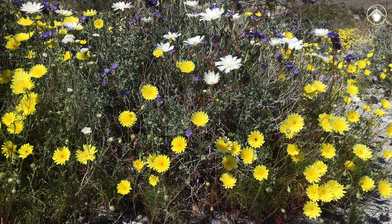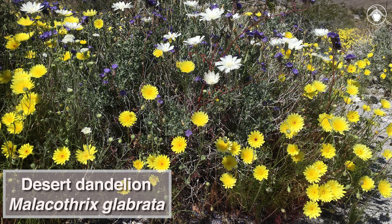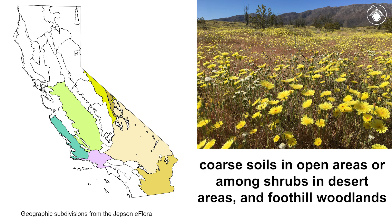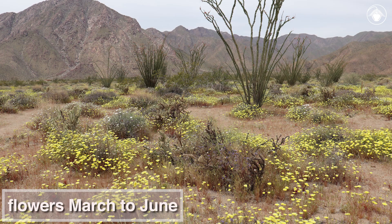This plant is the desert dandelion, also known by its scientific name, Malacothrix glabrata. This annual plant is found on coarse soils in open areas or among shrubs in desert areas and foothill woodlands. It flowers from March to June.